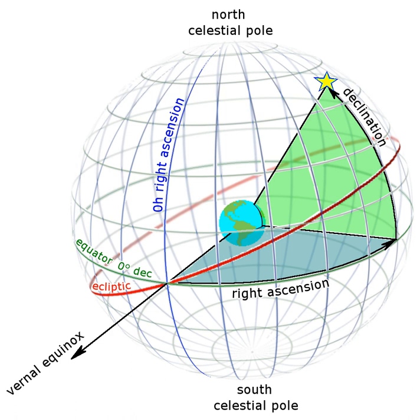Declination's angle is measured north or south of the celestial equator, along the hour circle passing through the point in question. The root of the word declination means a bending away, or a bending down. It comes from the same root as the words incline, bend toward, and recline, bend backward.